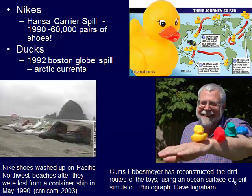There are two famous container spills, with websites posted on the course site. In 1990, the Hansa Carrier spill dumped 60,000 pairs of Nike shoes into the Pacific Ocean, and they washed up on various beaches in the Pacific Northwest. Researchers could track where the shoes washed up, figure out how far they traveled, how long it took, and reconstruct the actual trajectory of where they moved.